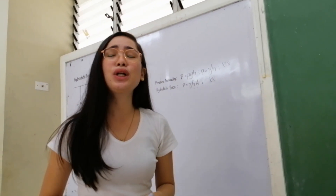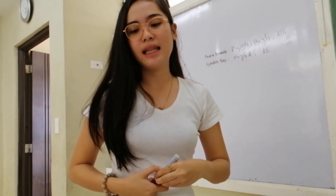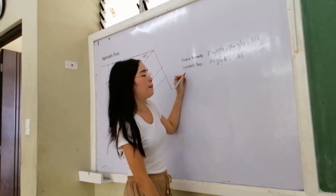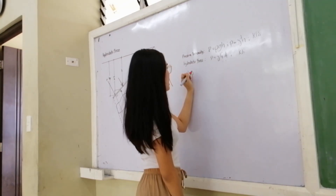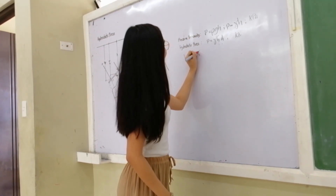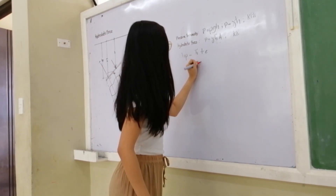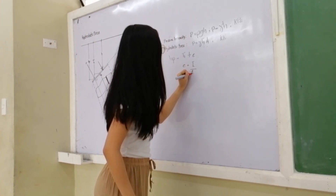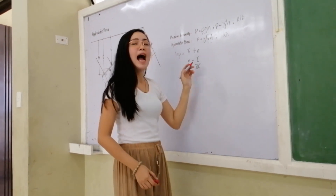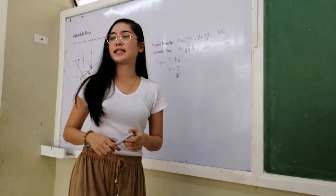We also have to locate the pressure center present in that submerged object. This formula is applied: Hp equals h-bar plus e, where e equals I over area times h-bar. I is the moment of inertia that you have learned from your previous subject.